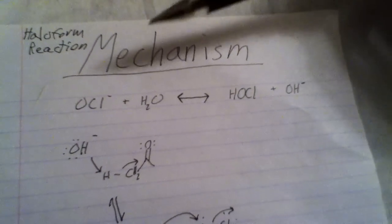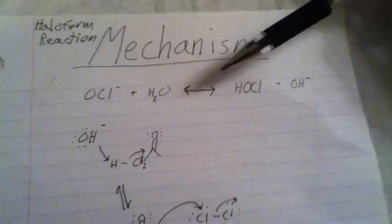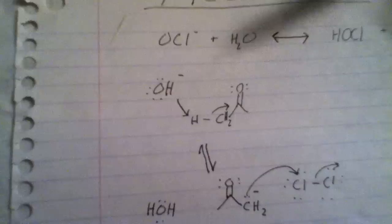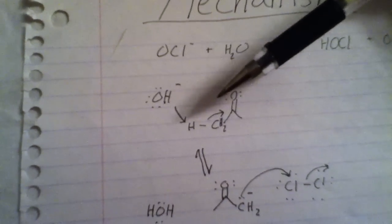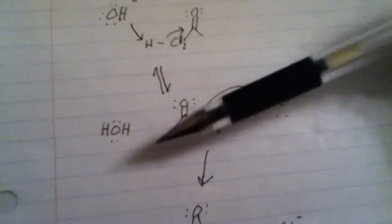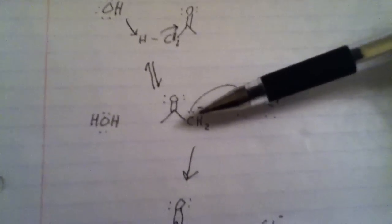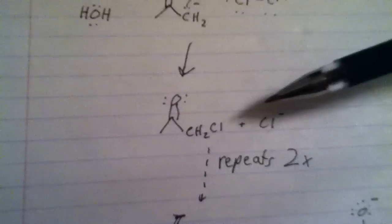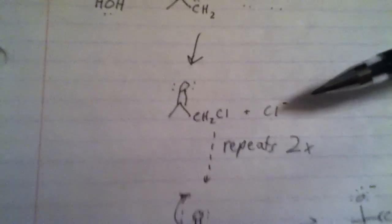The hypochlorite ion in water exists in equilibrium with hypochlorous acid and the hydroxide ion. The basic hydroxide ion reacts with the slightly acidic alpha hydrogen of the acetone, generating water and an enolate anion. This enolate reacts with the active chlorine in the bleach, generating chloroacetone and the chloride ion.